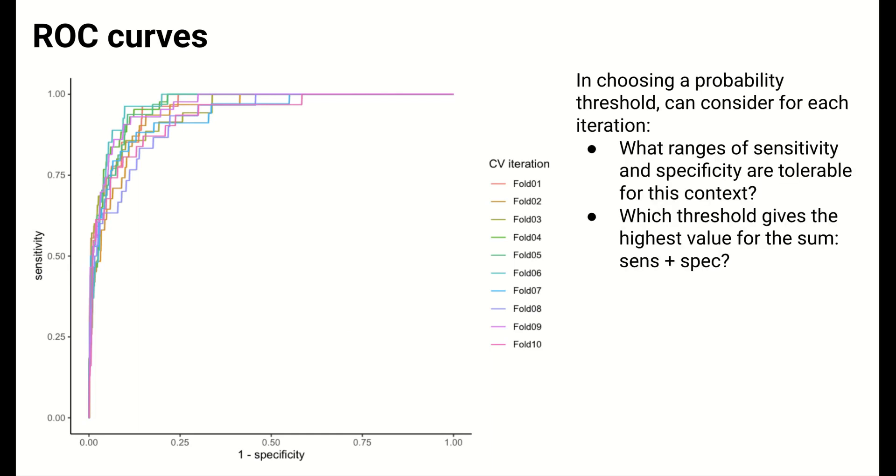If we're using these curves to guide our choice of probability threshold, we can consider for each CV iteration a couple of questions. What sensitivity and specificity ranges are acceptable for my data context? What threshold results in the highest sum of sensitivity and specificity? Viewing these results across cross-validation iterations can guide our thinking on this.